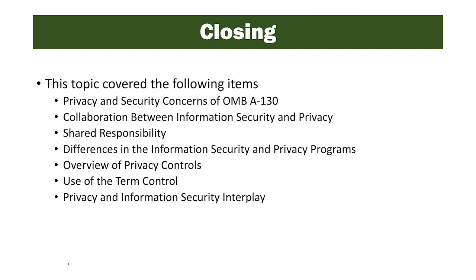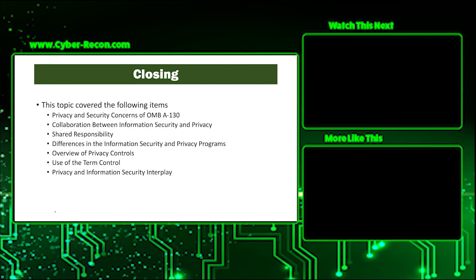In closing, this topic covered the following items: privacy and security concerns of OMB A-130, collaboration between information security and privacy, shared responsibilities, differences in the information security and privacy programs, an overview of privacy controls, use of the term 'control', and privacy and information security interplay. If any of these topics don't seem familiar to you, please go back and review them, and we'll see you in the next module.